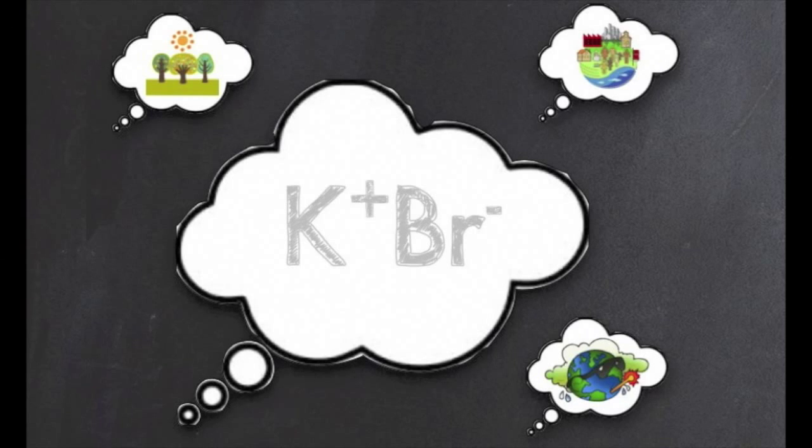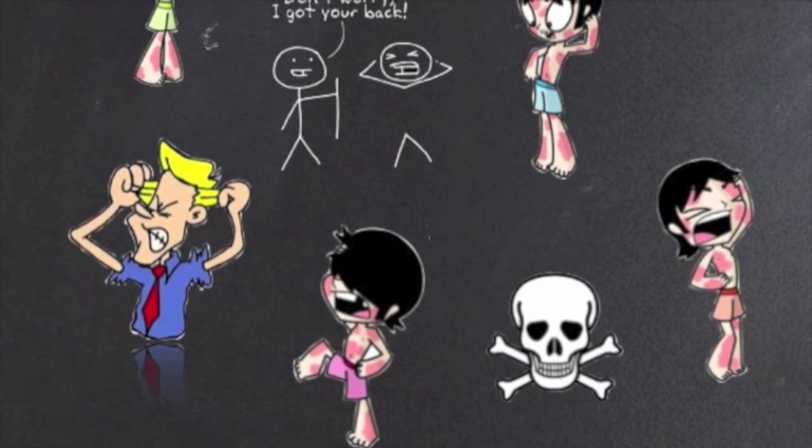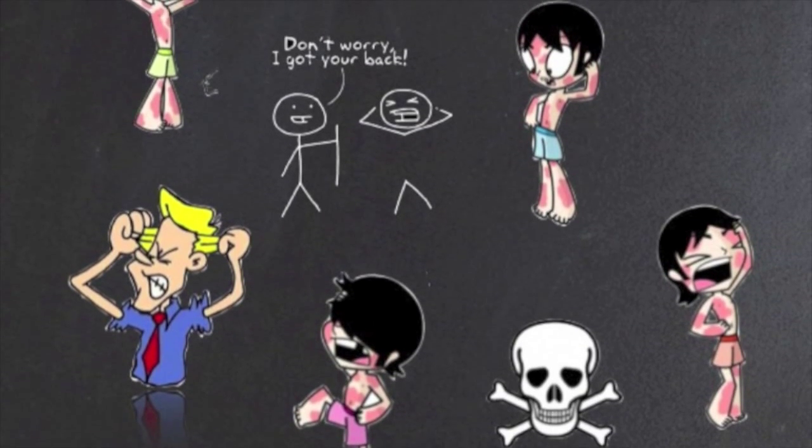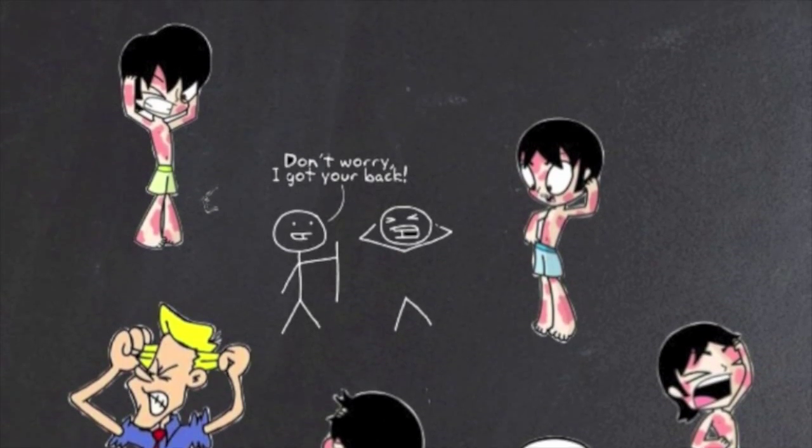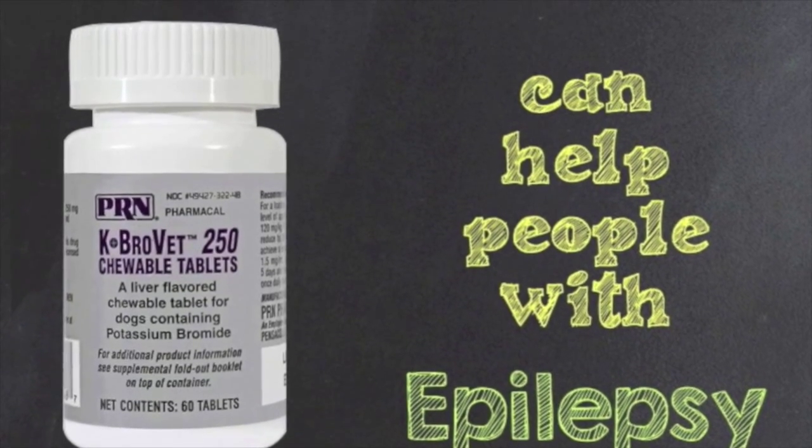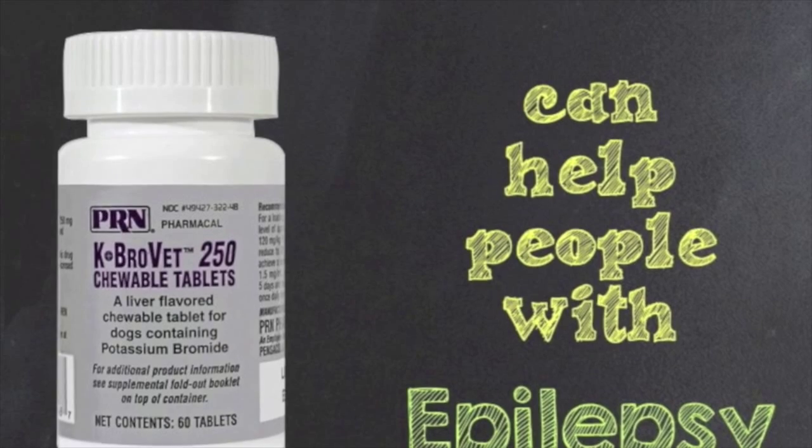Ever wondered what impact potassium bromide has on the environment? Like all chemicals, it can cause irritation to various parts of your body due to repeated or prolonged exposure. It can be toxic when inhaled or ingested. Despite the adverse health effects of potassium bromide, it can help people with seizure disorders.